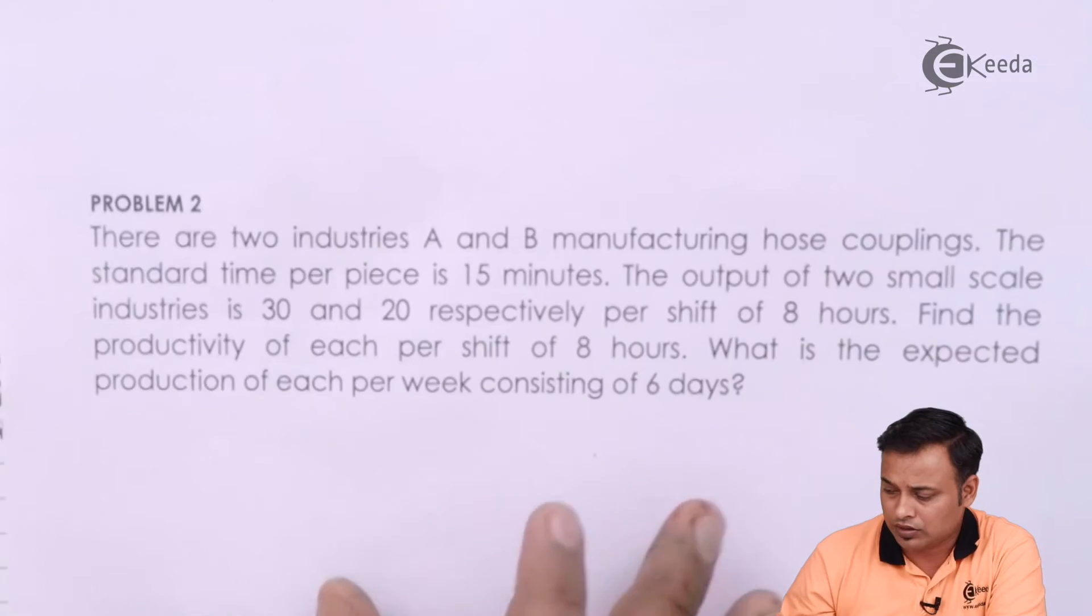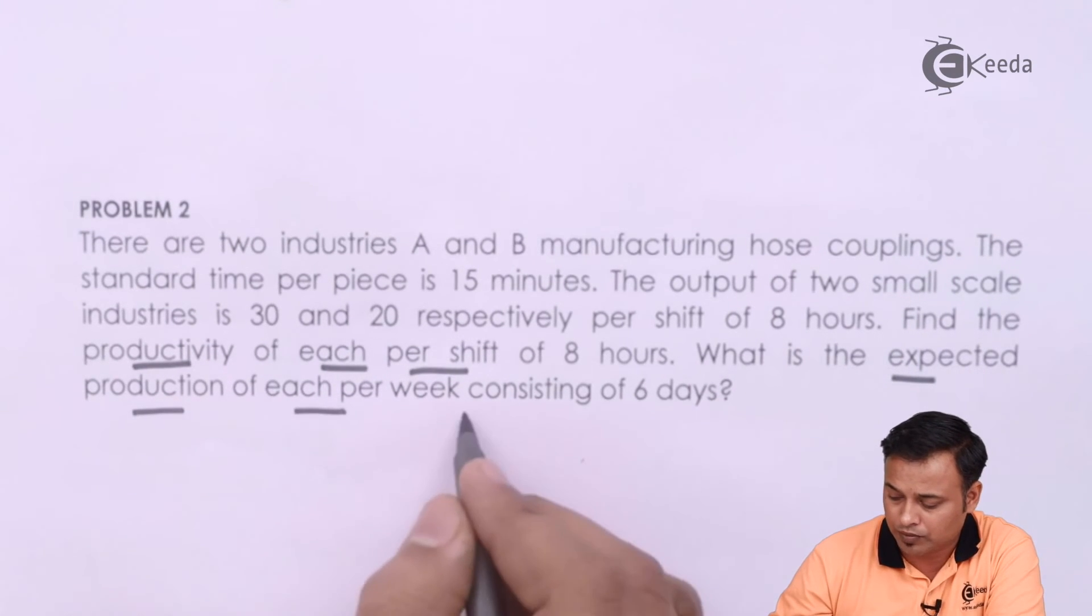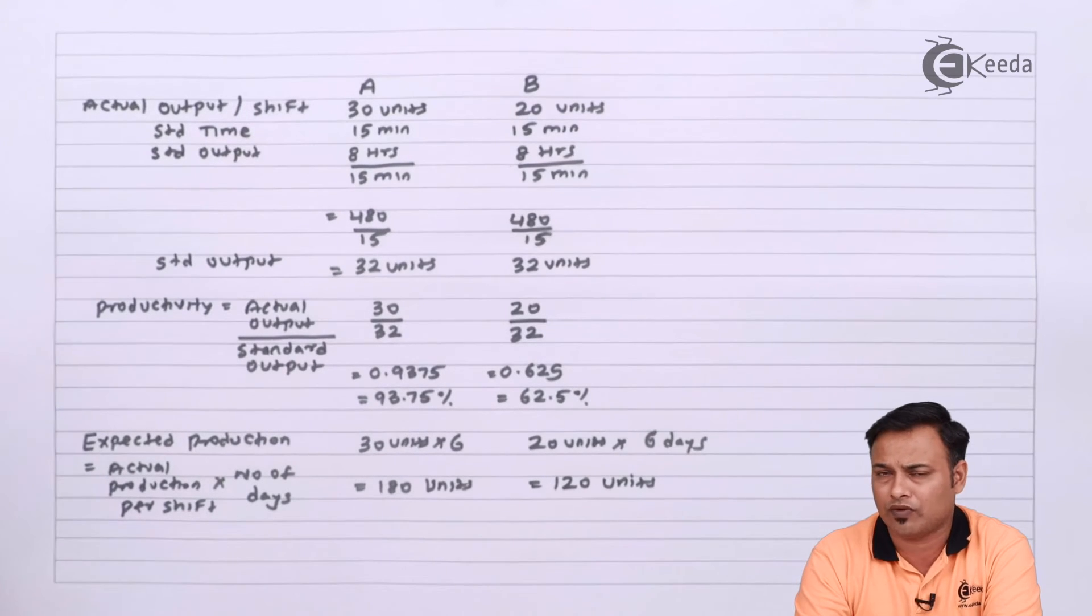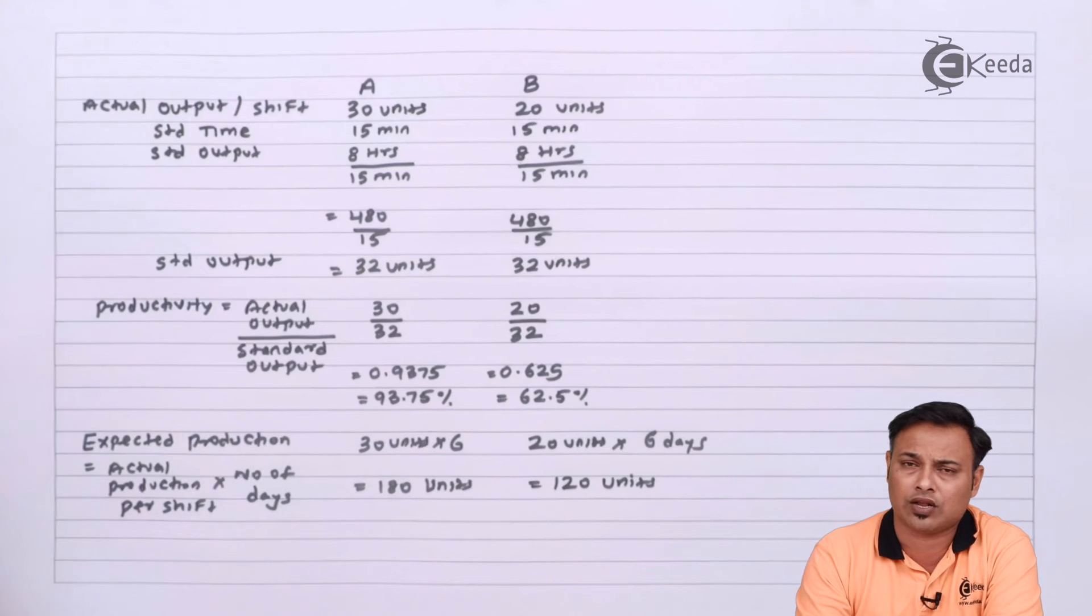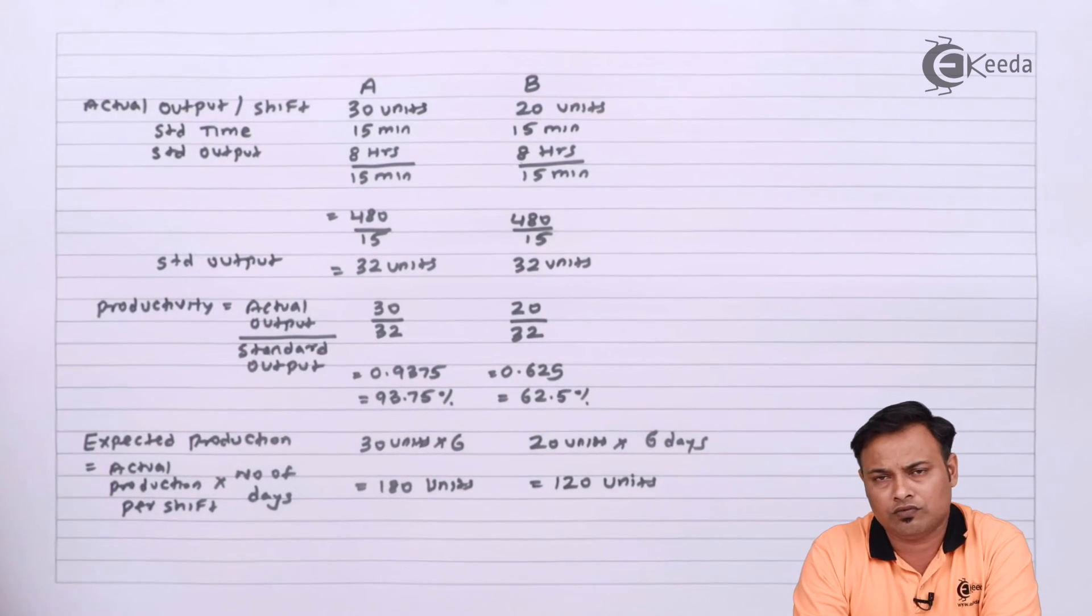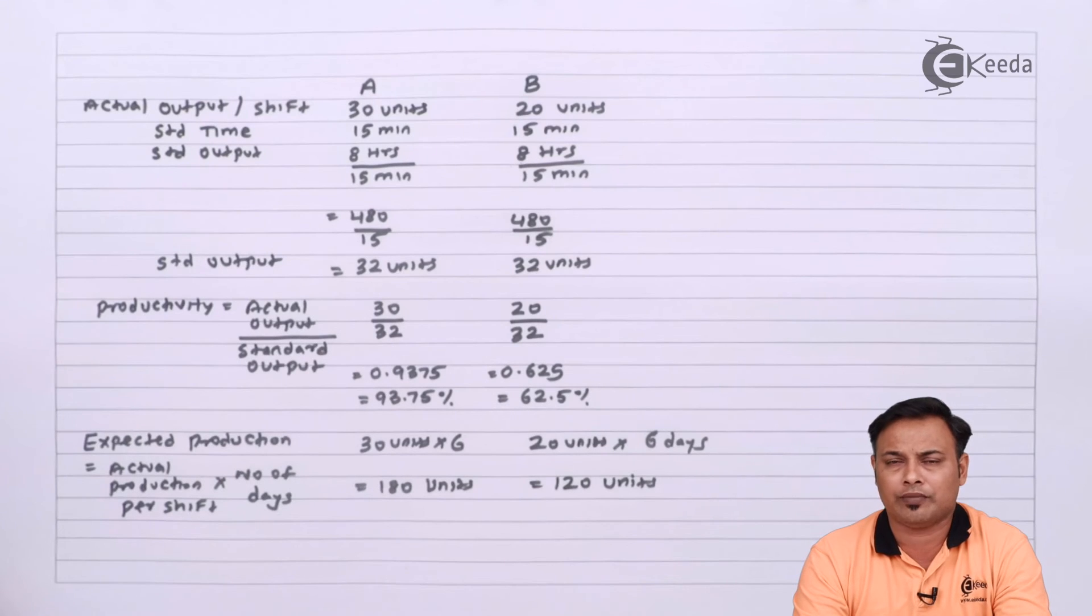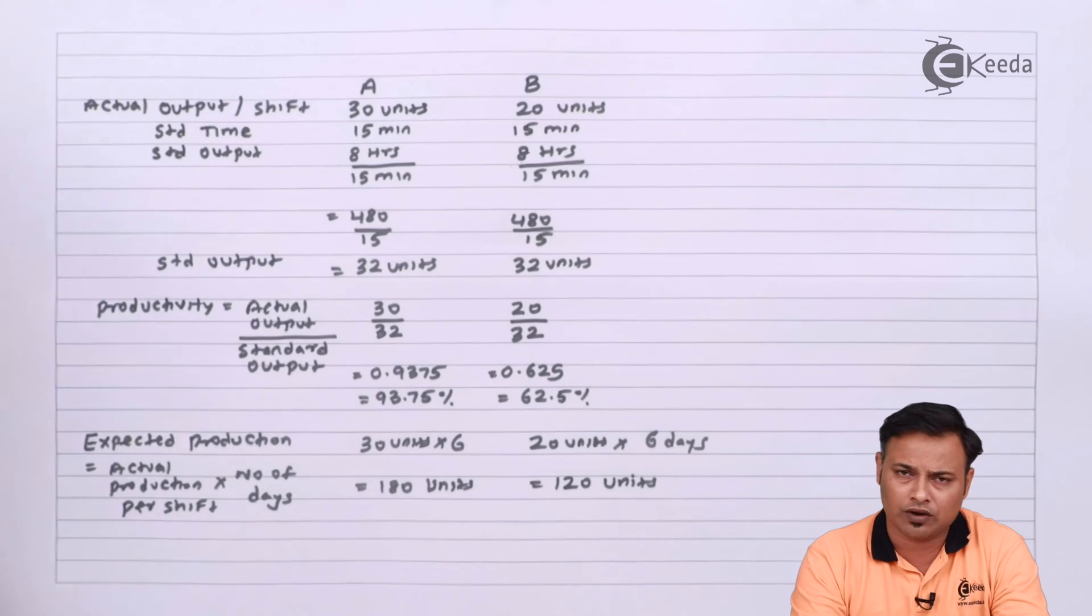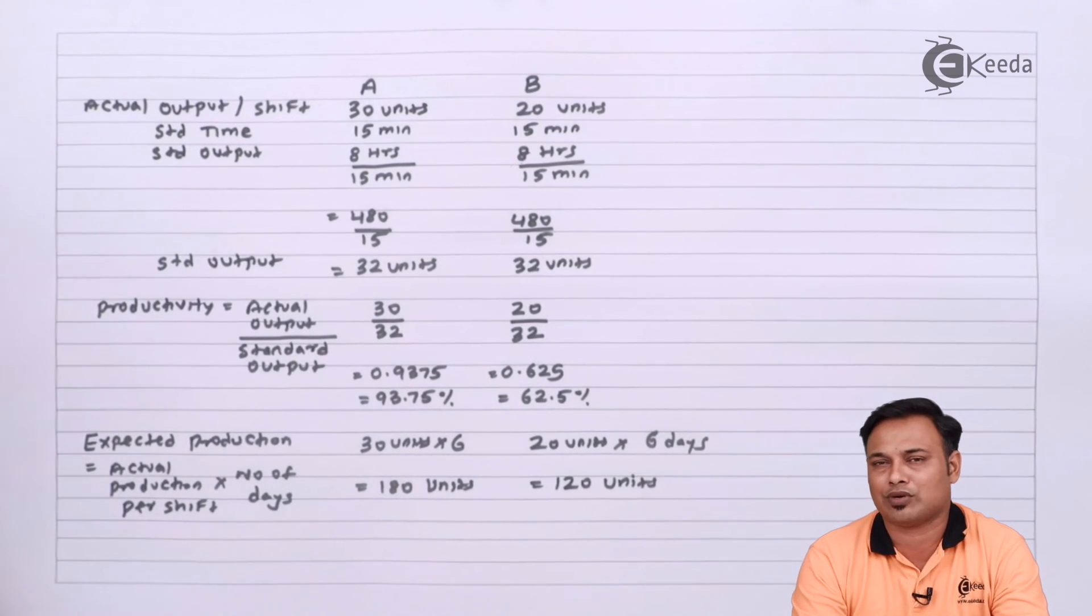They asked us to find out the productivity of each per shift and expected production each per week consisting of six days. You can expect such a problem in the exam for about three to four marks. It is definitely one of the most important problems. Don't underestimate such small problems, they are quite important from exam point of view. Often question papers cover a lot of such small questions which have been randomly picked up from any of the pages from the study material. So do put a lot of practice even on such simple problems rather than just focusing on the most difficult problems. Thanks for watching this video, do subscribe to our channel Ikeda.